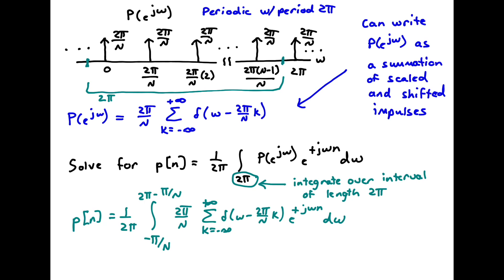We can make one further simplification: over this integration interval, there are only a finite number of impulses — specifically the ones between 0 and 2π. So we can change the limits on the summation. The first impulse included is at 0 and the last is the (N−1)-th, so we can change the summation limits to go from k = 0 to N − 1.